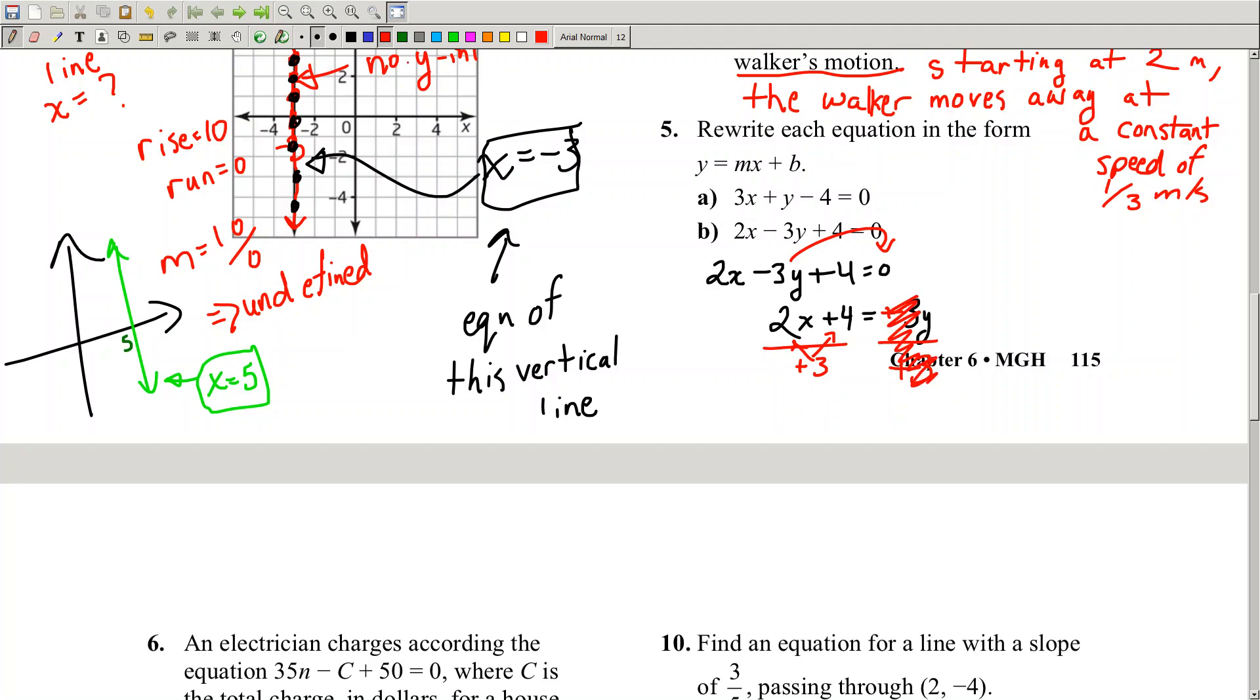Now 2 divided by 3 cannot be reduced, so I'm just going to leave that as a fraction. And I'm going to get 2 over 3x plus 4 over 3 because 4 divided by 3 is not a nice number. I can't reduce that either. So there you go.